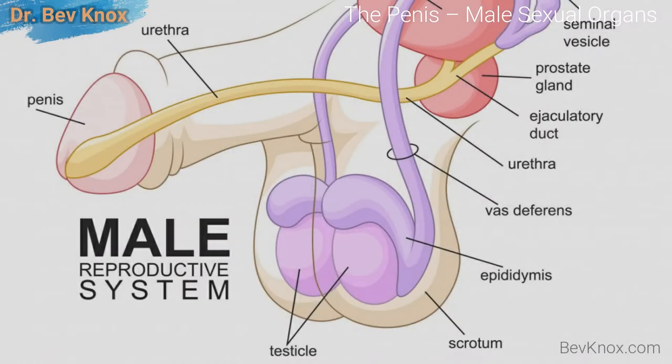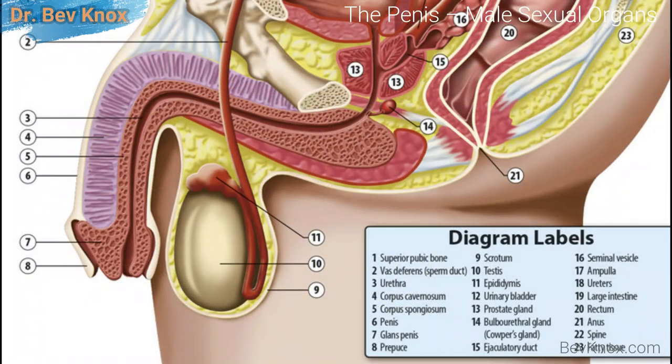The penis is a tubular organ with an end or tip called the glans. The opening at the end of the glans is the meatus, or urethral opening, through which urine and sperm pass. The main part of the penis is called the shaft. The raised ridge at the edge of the glans is called the corona, or the crown. While the entire penis is sensitive to sexual stimulation, the corona and the rest of the glans are the most sexually sensitive region.